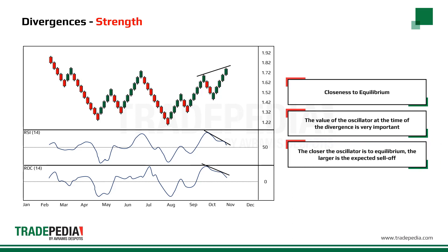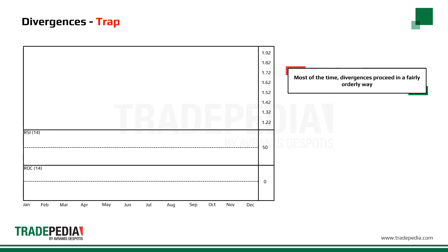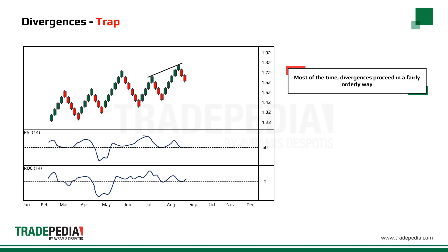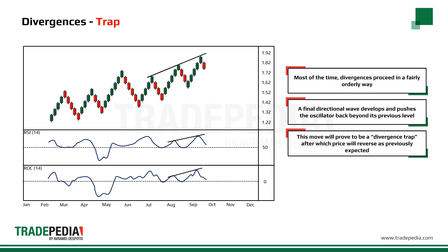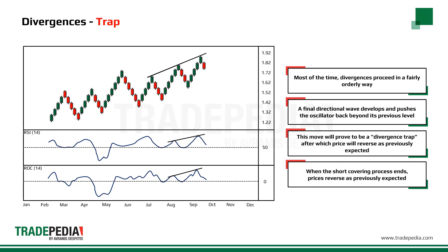The closer the oscillator is to the equilibrium, the larger the expected sell-off. Most of the time, divergences proceed in a fairly orderly way — they get progressively lower or higher as per the direction of the trend. Then, just as you expect the price to drop, a final rally develops and this advance will push the momentum indicator back above at least one or two previous peaks. Typically, this latest rally will prove to be a divergence trap, after which the price will fall in the manner previously expected. This final move is usually caused by some unexpected news event that causes short covering. When the short covering ends, there is very little to support the price and down it goes.